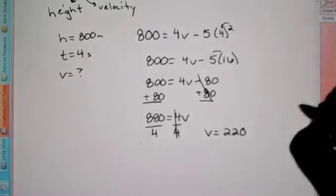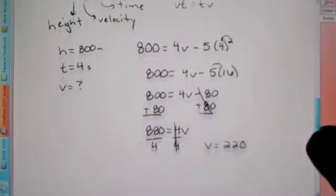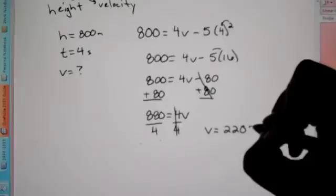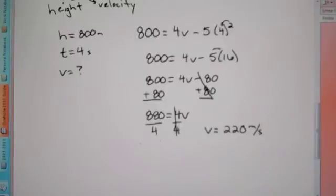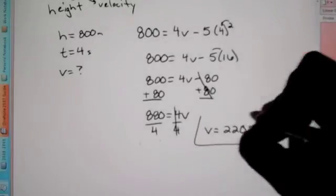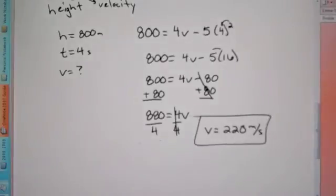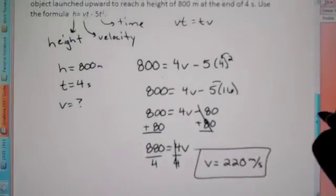As the labeling says, find it in meters per second. So 220 meters per second is our velocity. And that is how you solve for velocity.